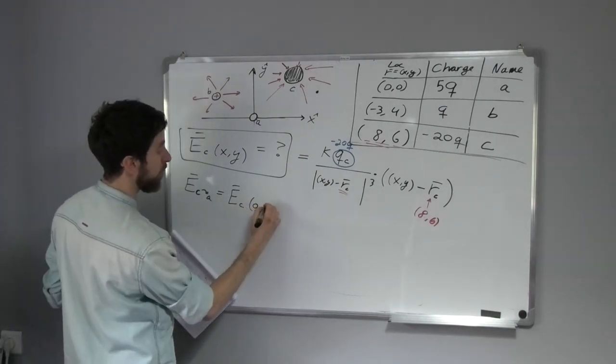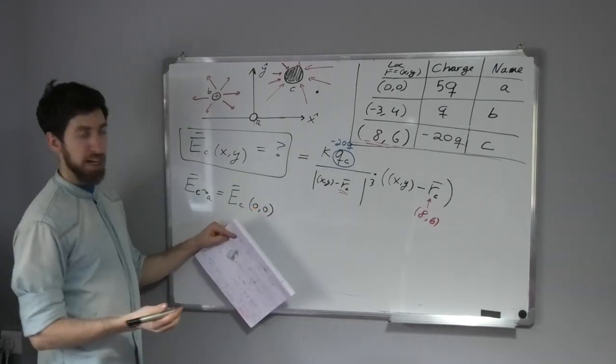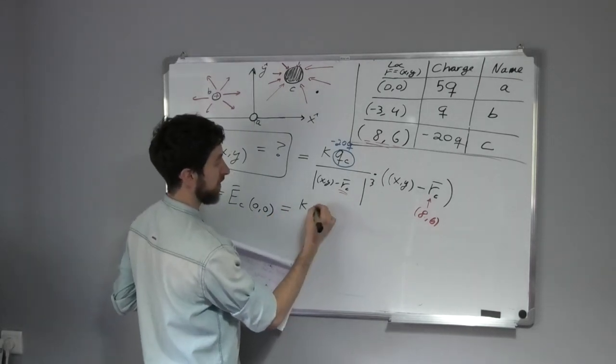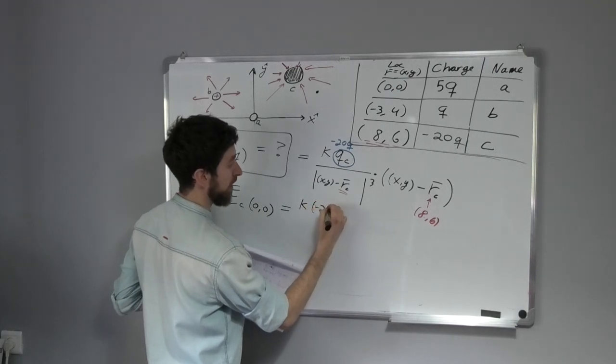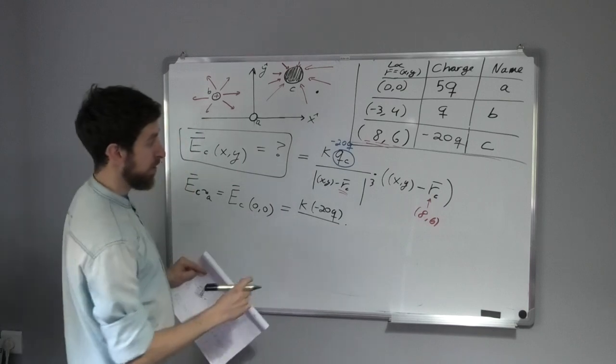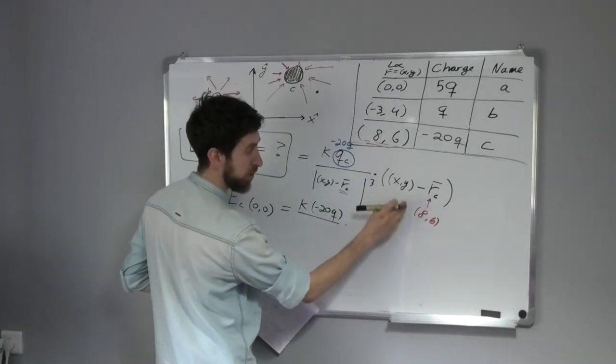So that's what I'm actually asking. So this equals K, and this is minus 20Q, right? And now I have this term, which is the region (0, 0) minus this, so it's just minus six and minus eight...